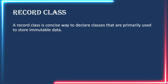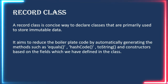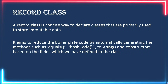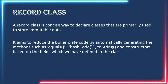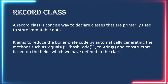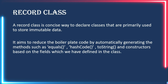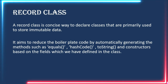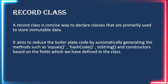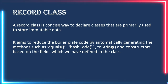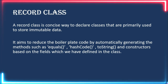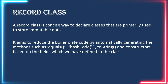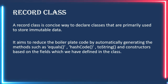Record class is basically used to create immutable classes. The main purpose of record class is to reduce boilerplate code by automatically generating methods such as equals, hashCode, toString, and constructors based on the fields defined in the class. Previously, whenever we created a class, we used to manually create constructors and override toString, equals, and hashCode methods. With record class, we don't have to do all that — it is done by Java itself.